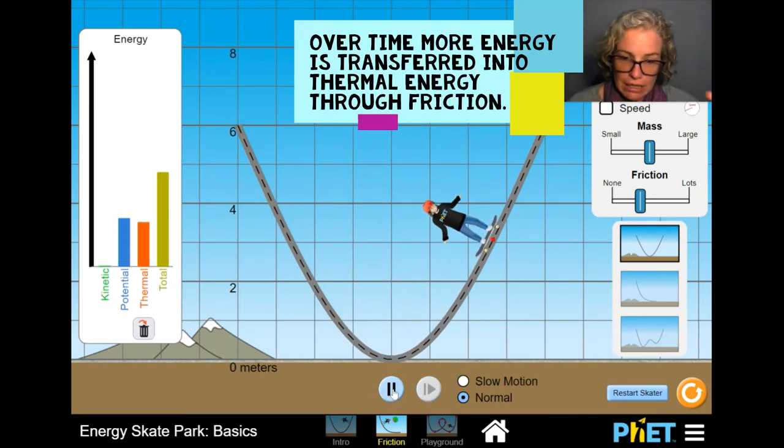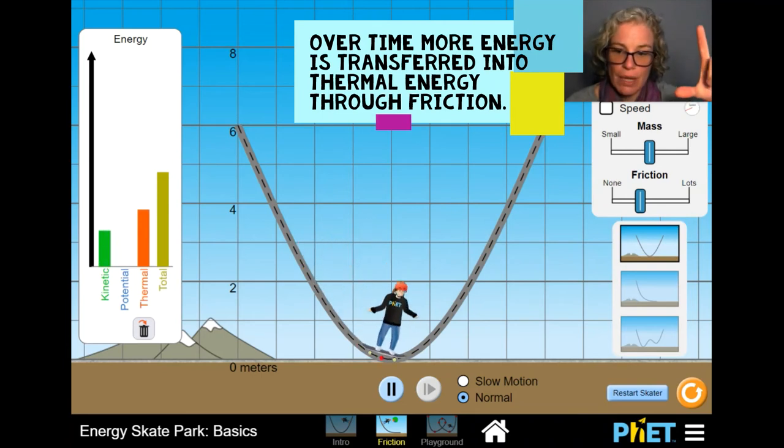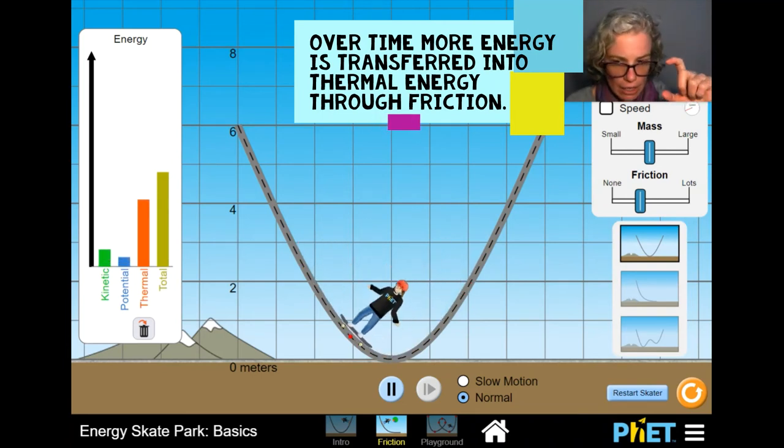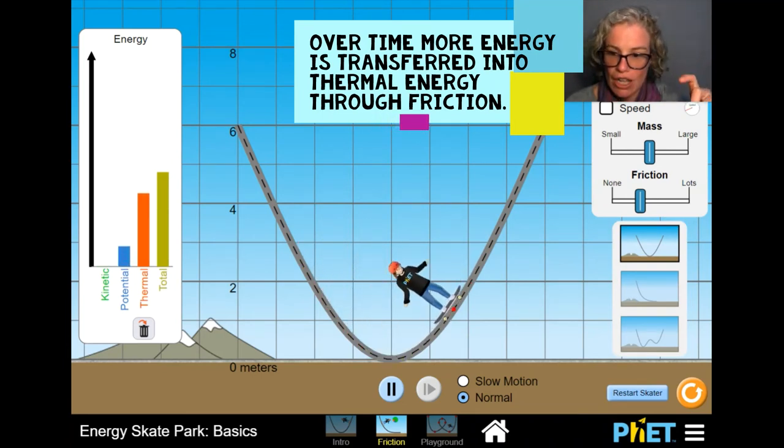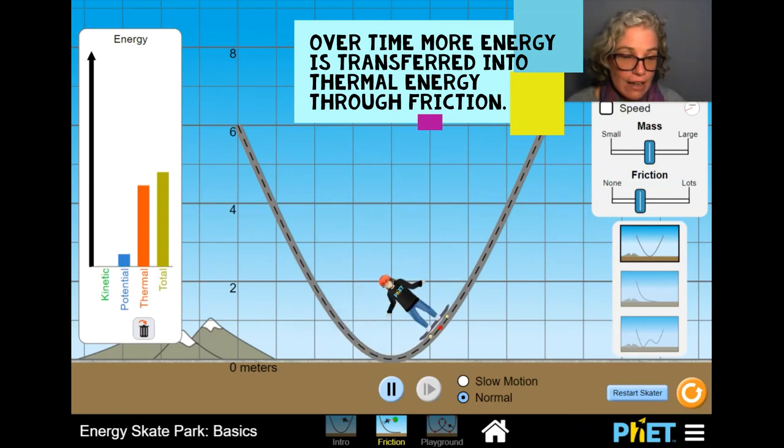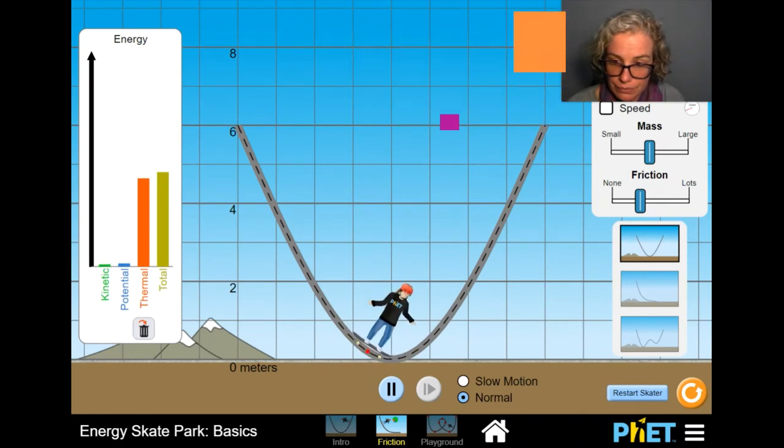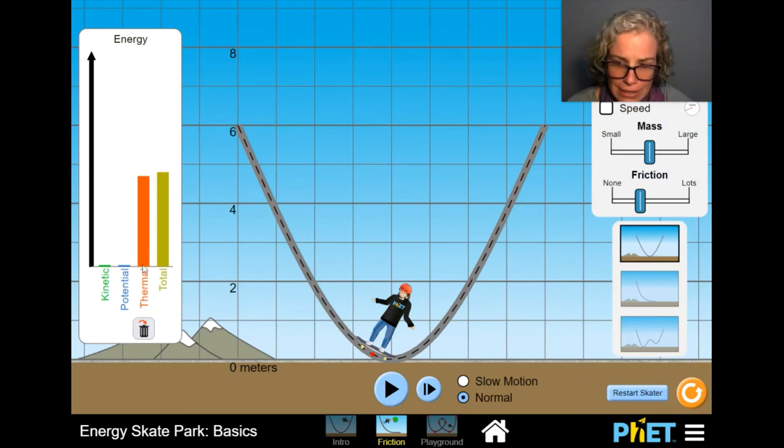So you see the kinetic and potential going back and forth and that thermal energy bar getting a little bit bigger and bigger and bigger until all the energy has been transferred into thermal energy. This video, this animation, does a really good job of showing us that energy can't be destroyed. We're just transferring it into a different form. And like real life, a lot of energy is transferred unintentionally due to friction.